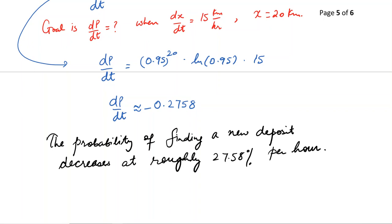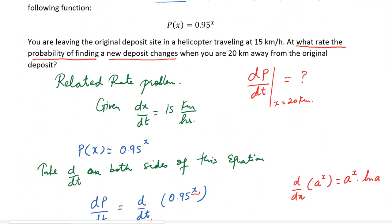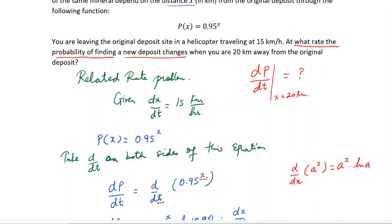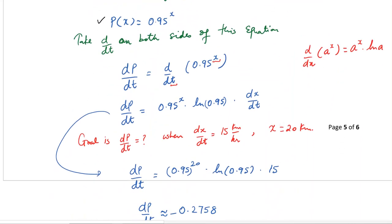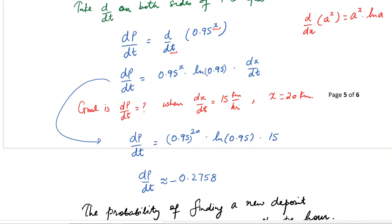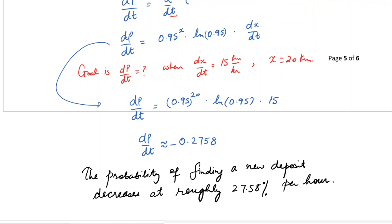As an overview, for any related rate problem: first, figure out the variables — what is given and what is asked. Then find an equation which relates the two variables. Once you have the equation, take the derivative with respect to time on both sides. Finally, plug in all the given values and find the solution. I hope you enjoyed the video.